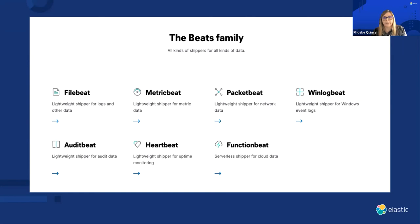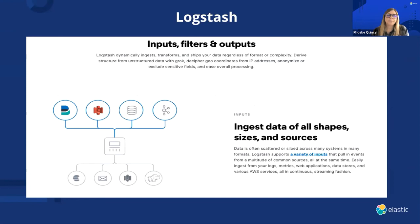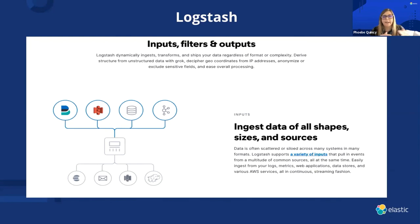Logs can be massive files, so you don't want to have to look through all those lines of code. You send this on to Beats, it ships off to Logstash, and then Logstash basically inputs and filters — this is where we're parsing all of that data. Say you've got names, addresses, emails, or products — whatever kind of data you're looking at — you identify those fields and then format them so they can be easily and quickly indexed.